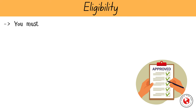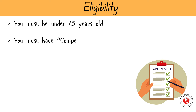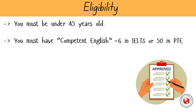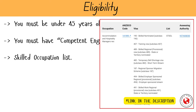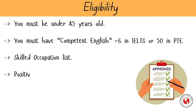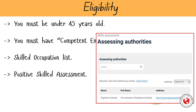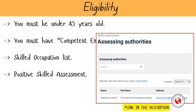Firstly, you must be under 45 years old when you apply. You must have competent English, which is 6 in IELTS and 50 in the PTE exam. Your occupation must be on the relevant skills occupation list, such as the medium and long-term strategic list. You need a positive skills assessment for your nominated occupation from the relevant assessing authority — for example, Engineers Australia assesses engineering occupations.